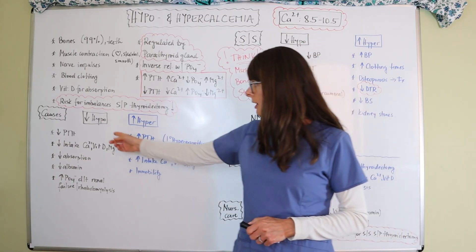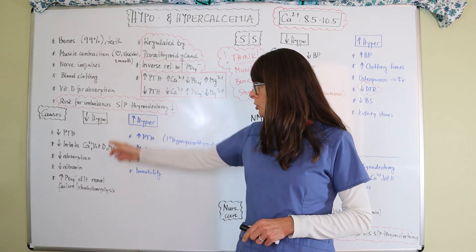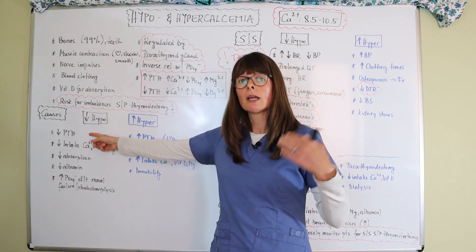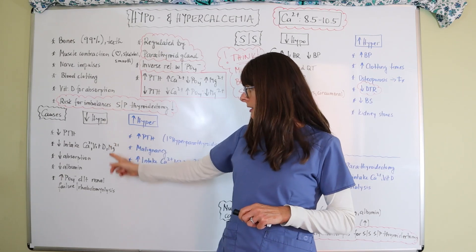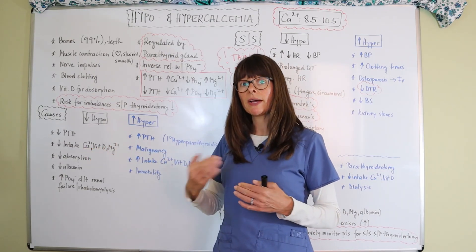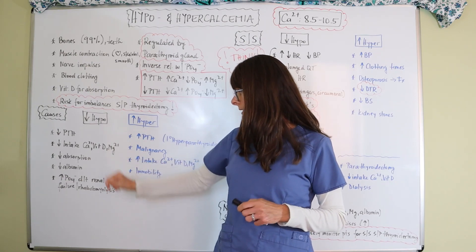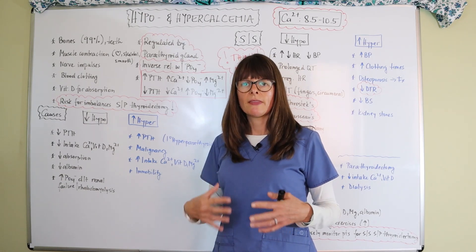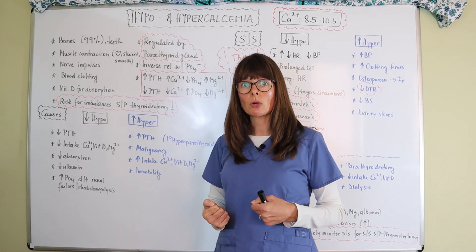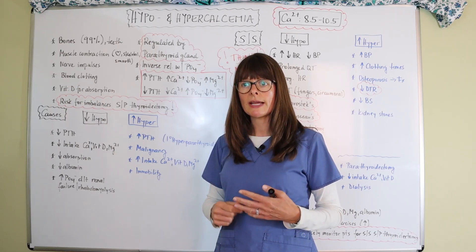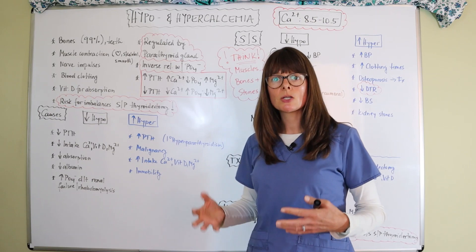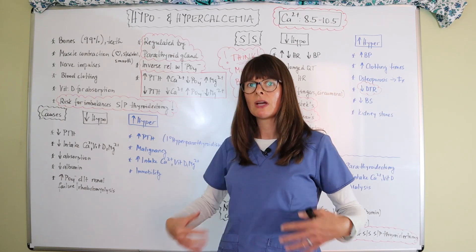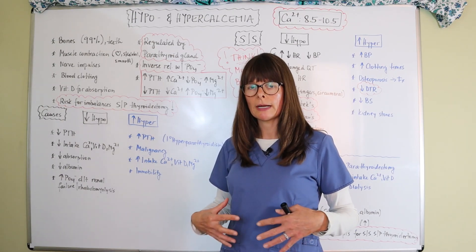So causes for hypo and hypercalcemia. For hypocalcemia, we said the parathyroid gland regulates it, so if there's low parathyroid hormone, we're going to have low calcium levels. But it can also occur because of low intake of calcium, vitamin D that's needed for absorption, or magnesium. And then there can be decreased absorption. So any kind of GI disorders that alter the way we are able to absorb the calcium. So think about somebody with ulcerative colitis, irritable bowel, some sort of short bowel syndrome, maybe after an ileectomy or colectomy, any kind of surgery that alters our intestinal structure.